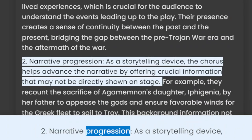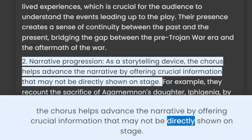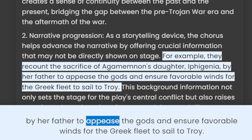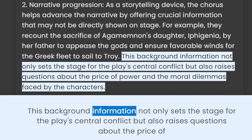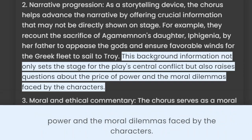2. Narrative progression. As a storytelling device, the chorus helps advance the narrative by offering crucial information that may not be directly shown on stage. For example, they recount the sacrifice of Agamemnon's daughter, Iphigenia, by her father to appease the gods and ensure favorable winds for the Greek fleet to sail to Troy. This background information not only sets the stage for the play's central conflict but also raises questions about the price of power and the moral dilemmas faced by the characters.